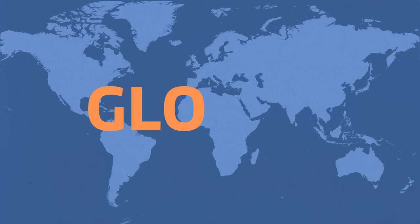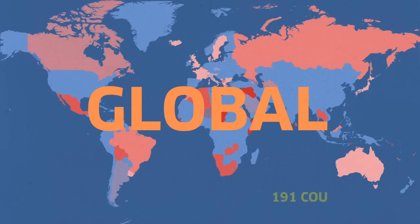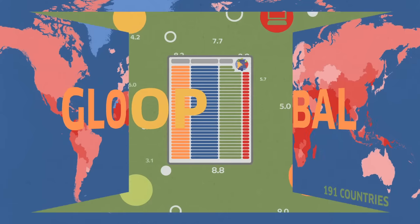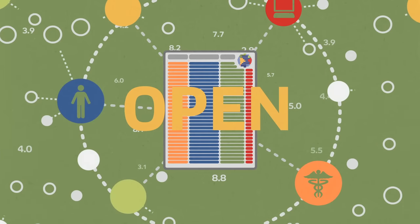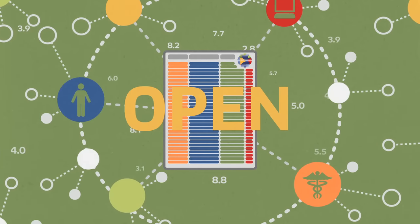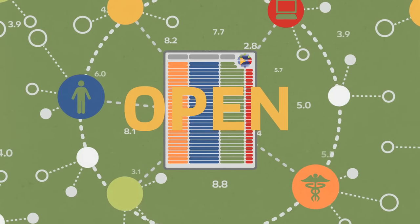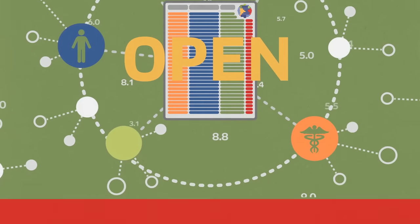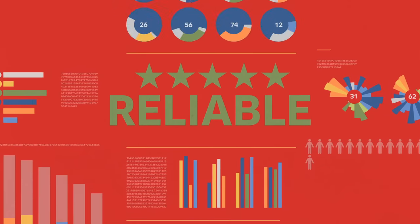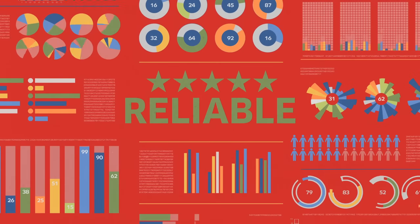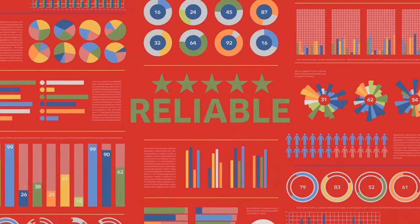INFORM is global — it covers 191 countries. It's open: the data and methodology are freely available. And it's reliable, based on the best methods and data, and is regularly updated.